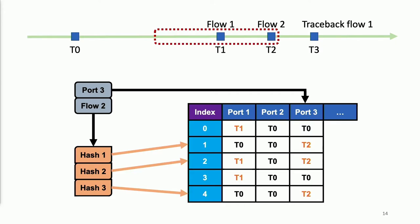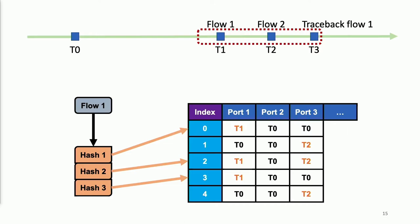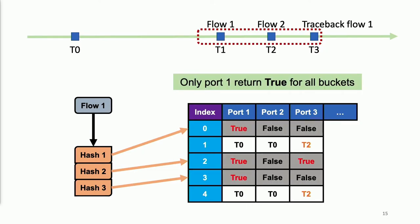After that, if we want to know where flow 1 was sent from, we will hash the 5-tuple of flow 1, so that we got the same buckets as before. And we test every port. We can see that only port 1 returns true for all the buckets. So that's why we know port 1 is the incoming port for flow 1.